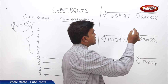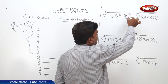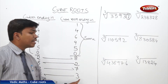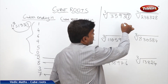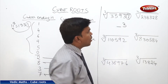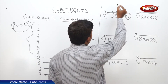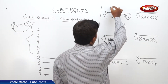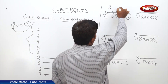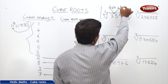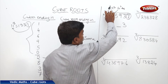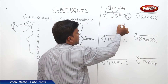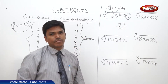The second step: check what digit the cube number ends in. The cube number ends in 7. If a cube number ends in 7, its cube root should end in 3. So the ending digit of the answer is 3. Now come to the second partition, which is 35. The number 35 comes between 3 cubed (27) and 4 cubed (64). We always take the lesser number, which is 3. So the answer is 33.